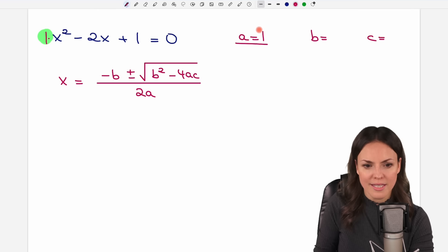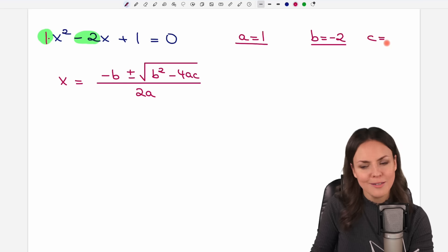B is always the number in front of the x part with a sign. So it's negative 2. And c is always the number that doesn't have any x in here in this part. So it's just the plus 1. So my c equals 1.